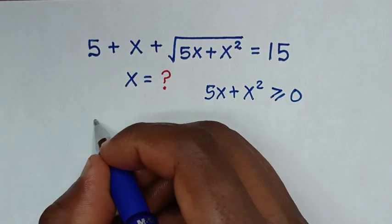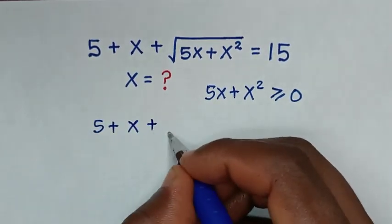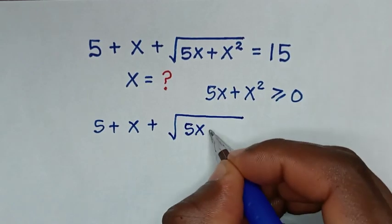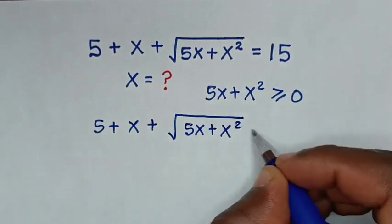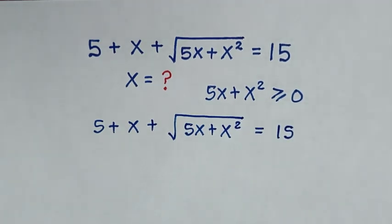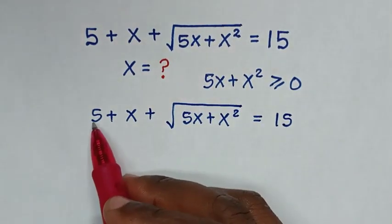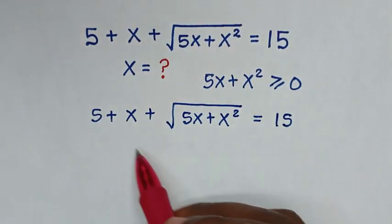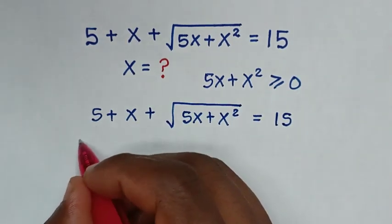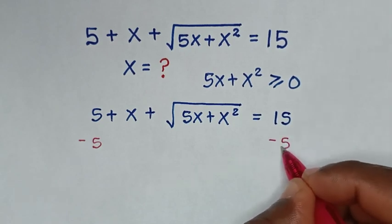Our problem is 5 plus x plus square root of 5x plus x square is equal to 15. In the first step we will take 5 plus x to the other side by first subtracting 5 from both sides,